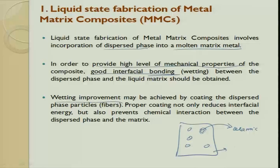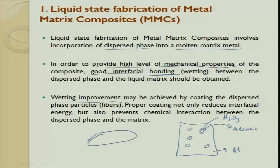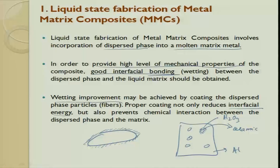The wetting property can be improved. Suppose you decide to take aluminum and alumina but they do not gel properly — the way out is to coat one more layer between the alumina and the aluminum which helps in locking these particles in the base matrix. A wettability improvement can be achieved by coating the dispersed phase particle — it can be a fiber, a particulate, or a whisker. A proper coating not only reduces the interfacial energy, but also prevents chemical interaction between the dispersed phase and the matrix so that you can get the required output.